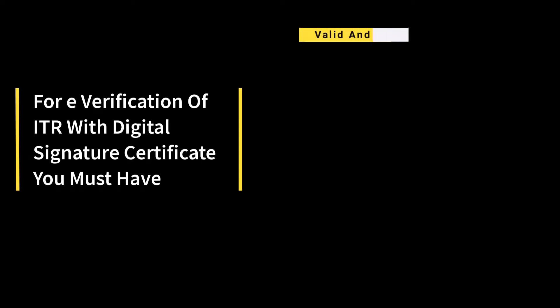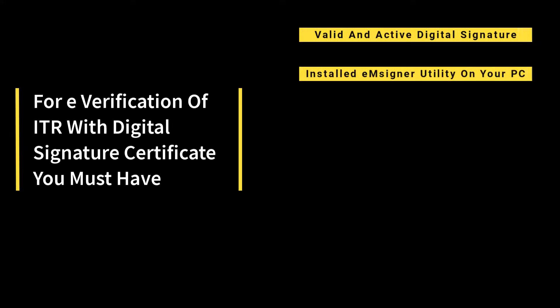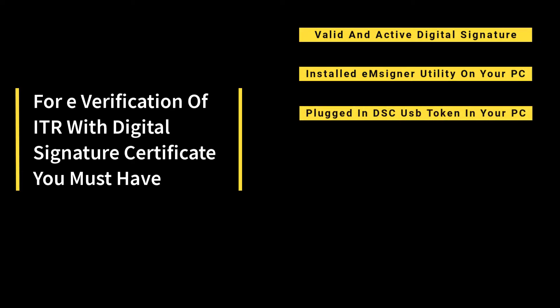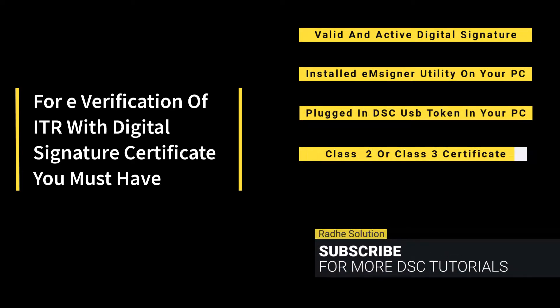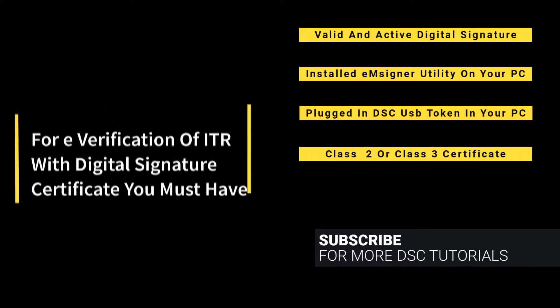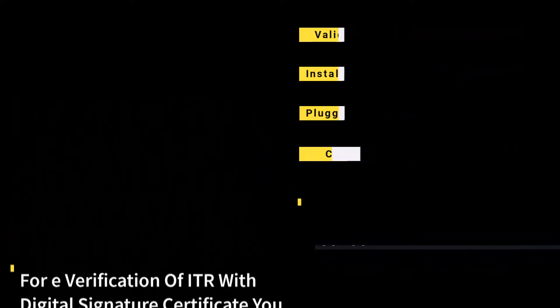For E-Verification of ITR with Digital Signature, you must have: 1. Valid and Active Digital Signature. 2. Install EM Signer Utility on your PC. 3. Plugged in DSC USB Token in your PC. 4. Class 2 or Class 3 Certificate.